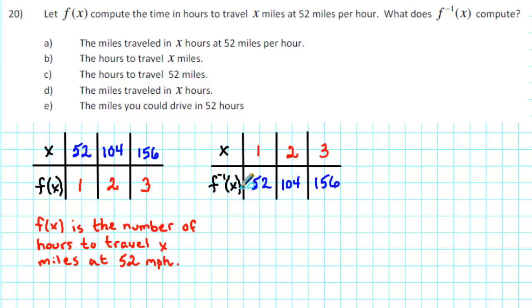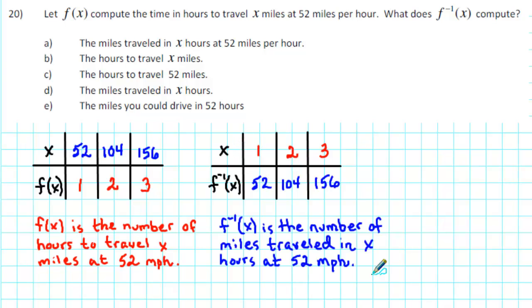So f inverse of x represents the number of miles traveled in x hours at 52 miles per hour. It follows that a is the correct answer.